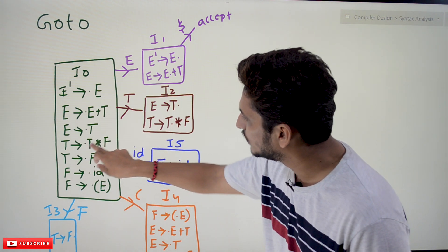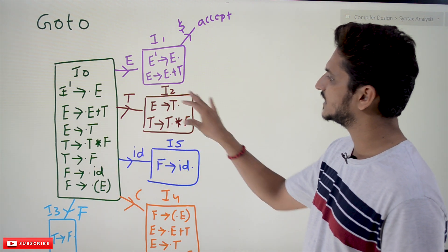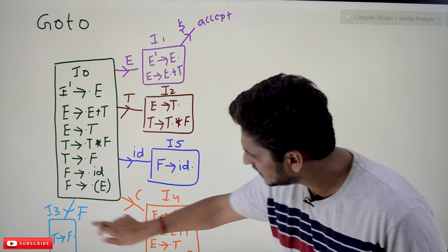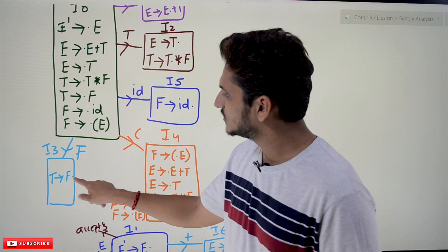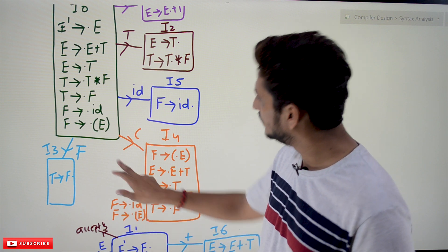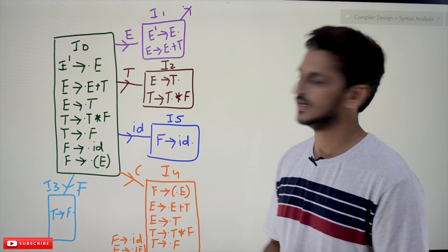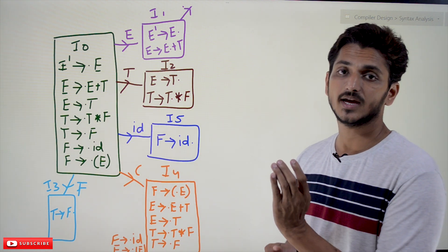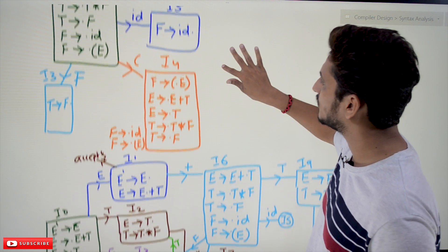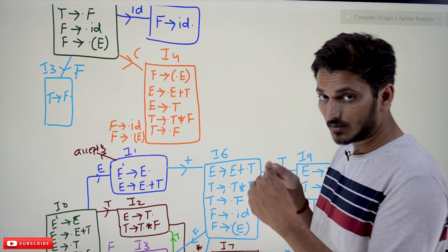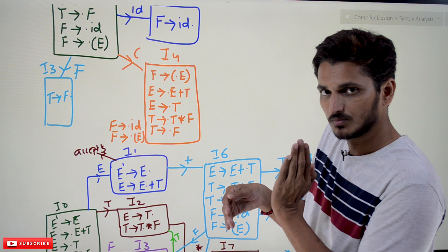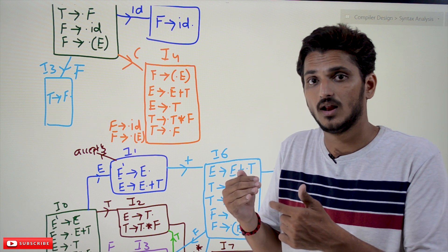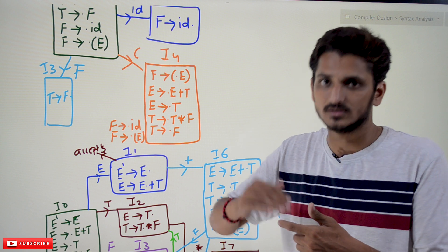Moving one step on T from I₀ gives E → T•, and moving one step on T from within gives T → T• * F. This state is called I₂. Moving one step on F gives T → F•, which is state I₃. Moving one step on id gives F → id•, which is state I₅.